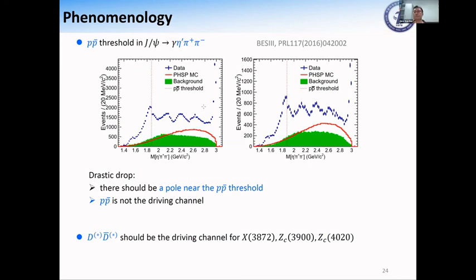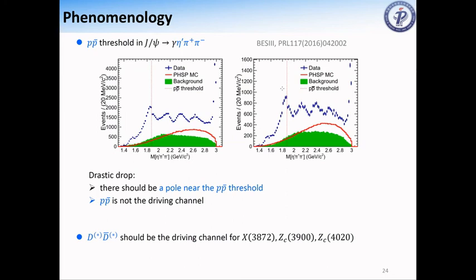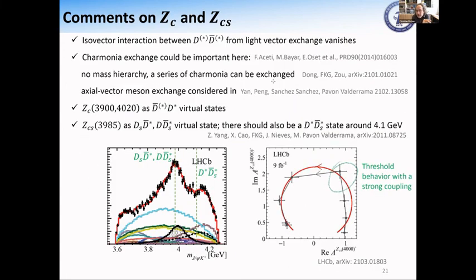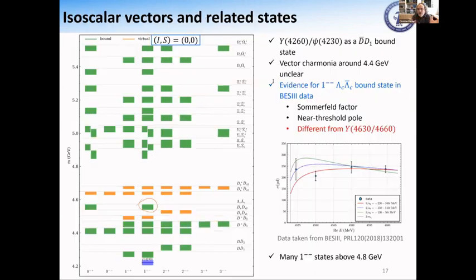From my analysis, I would say this sudden drop indicates the existence of a near PP-bar threshold pole. Also, PP-bar is not the driving channel for the production of this structure — some channel is produced first, which then generates PP-bar, and finally the PP-bar rescatters into the final eta-prime pi-pi state. There should be a near-threshold pole to produce this sudden drop, because this requires the scattering length in the PP-bar channel to be large, like a bound state or something. Any other questions? I think we can have one more.